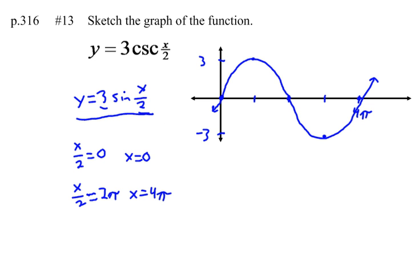Now I want to graph y equals 3 times the cosecant of x over 2. First of all, let's talk about these 0 values. Cosecant is 1 over sine. So if I have a value of 0 for sine, 1 over 0 doesn't exist. So at all these 0 values, cosecant does not exist. And I can show that by drawing some asymptotes.